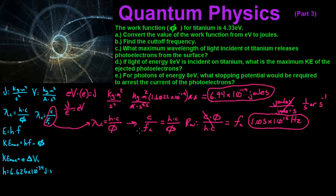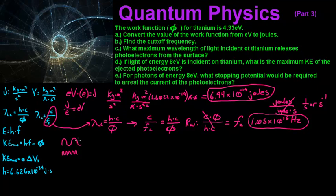For part C: what maximum wavelength of light incident on titanium releases photoelectrons from the surface? When talking about maximum wavelength — a minimum wavelength would correspond to a higher frequency. Since we're talking about maximum wavelength, we're talking about a lower frequency, which correlates to a lower energy. For that, we use the cutoff wavelength, which is basically the maximum wavelength possible for light to be incident and still release photoelectrons from the surface.